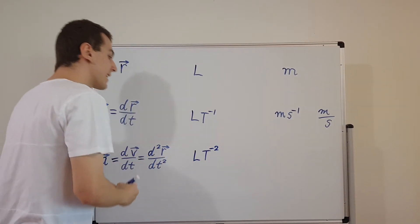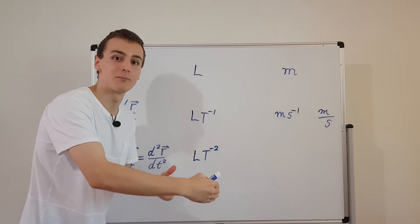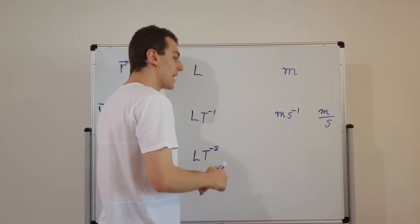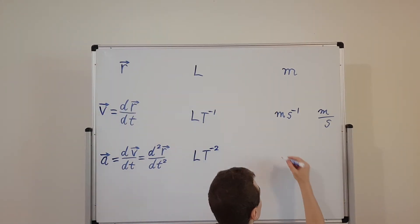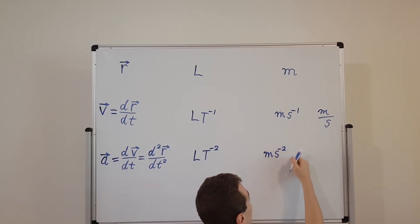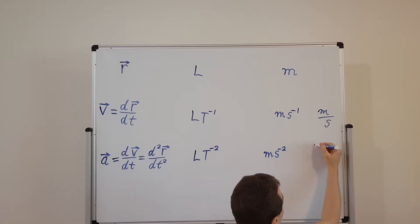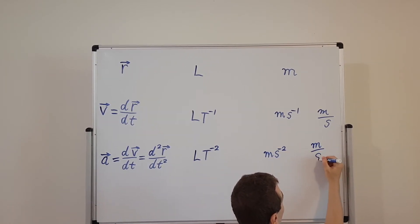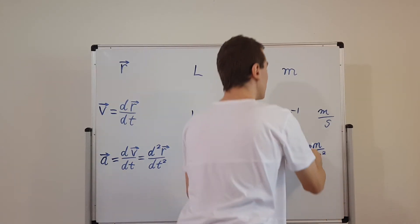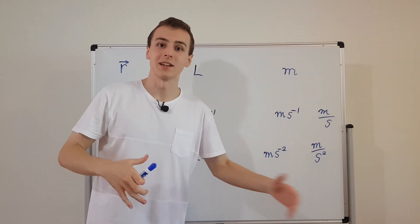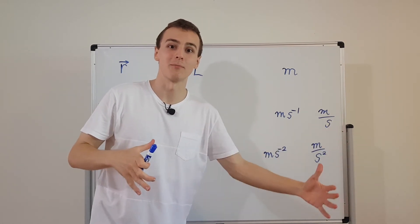So we've got length per time per time. And how does that translate into SI units? We're going to have meters per second squared. So time to the minus two is exactly the same as writing meters over seconds squared. So meters per second squared, or meters per second per second, is length per time per time.